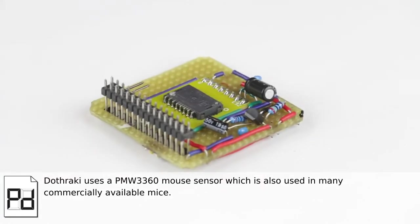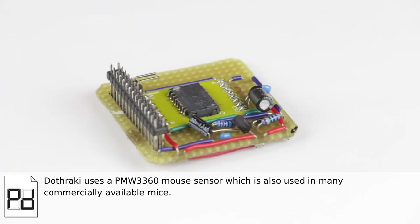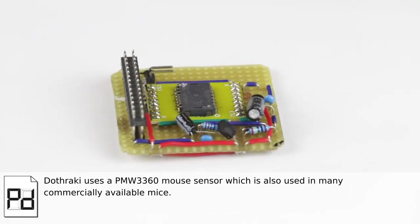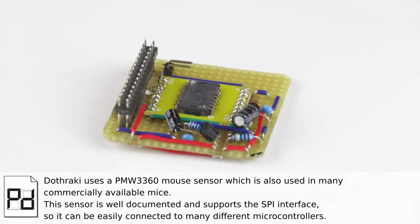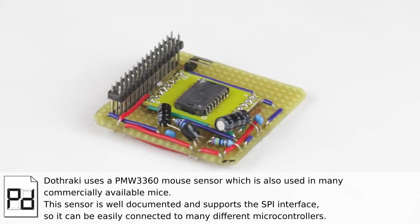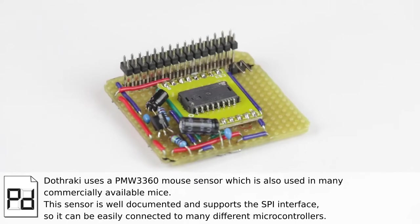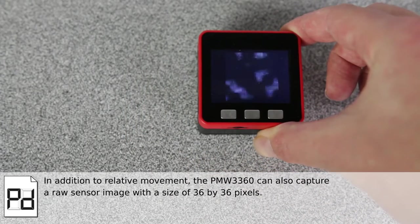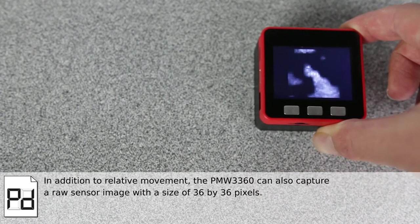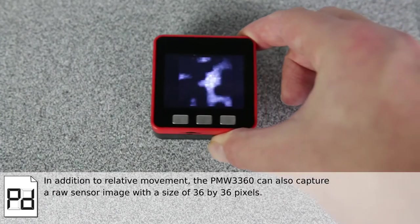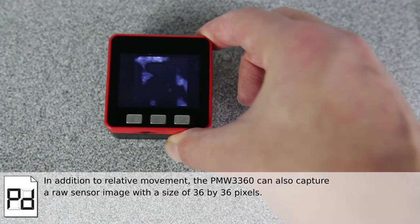DOTRAKI uses a PMW3360 mouse sensor, which is also used in many commercially available mice. This sensor is well documented and supports the SPI interface, so it can be easily connected to many different microcontrollers. In addition to relative movement, the PMW3360 can also capture a raw sensor image with a size of 36x36 pixels.